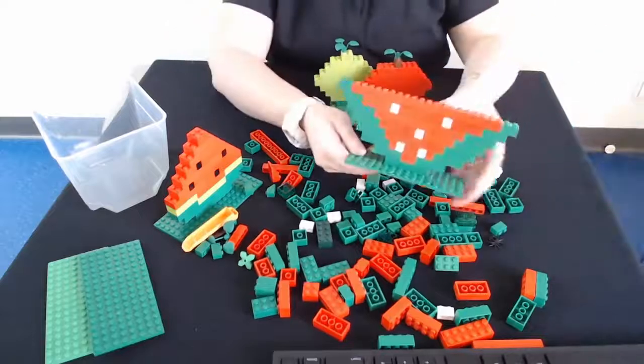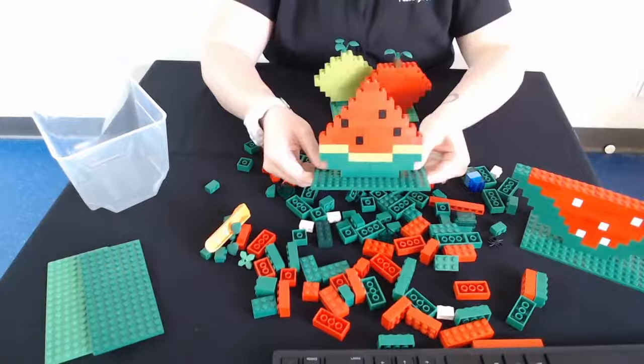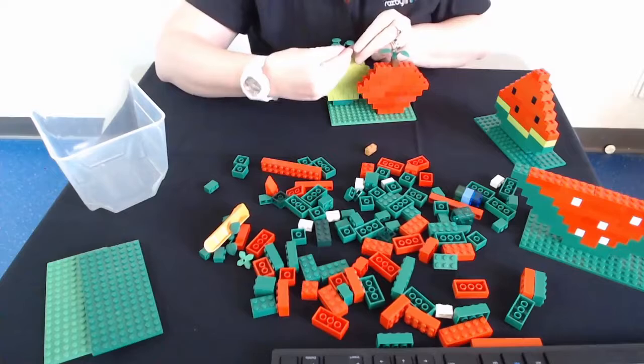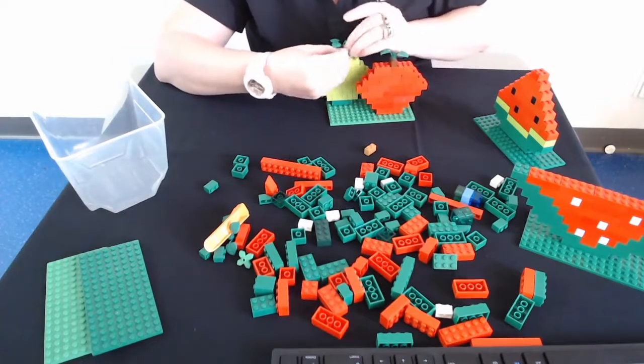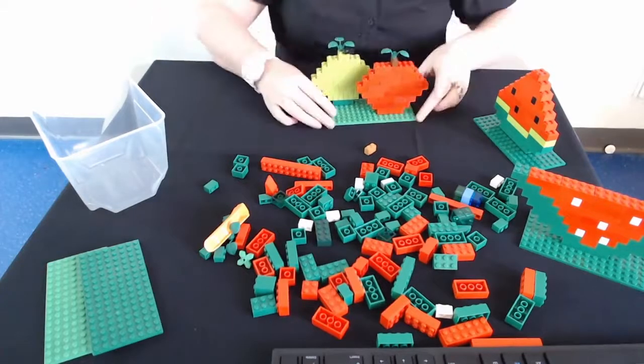We have watermelon and another slice of watermelon. And you know what, we've got a teeny tiny little spike. I'm just going to stick this there just because he likes to hang out on the little apples.